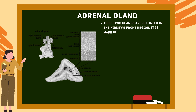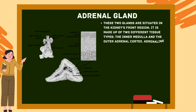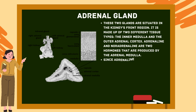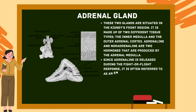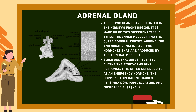Adrenal glands: These two glands are situated in front of the kidneys. They are made up of two different tissue types — the inner medulla and the outer adrenal cortex. Adrenaline and noradrenaline are two hormones produced by the adrenal medulla. Since adrenaline is released during the fight-or-flight response, it is often referred to as an emergency hormone. Adrenaline causes perspiration, pupil dilation, and increased alertness.